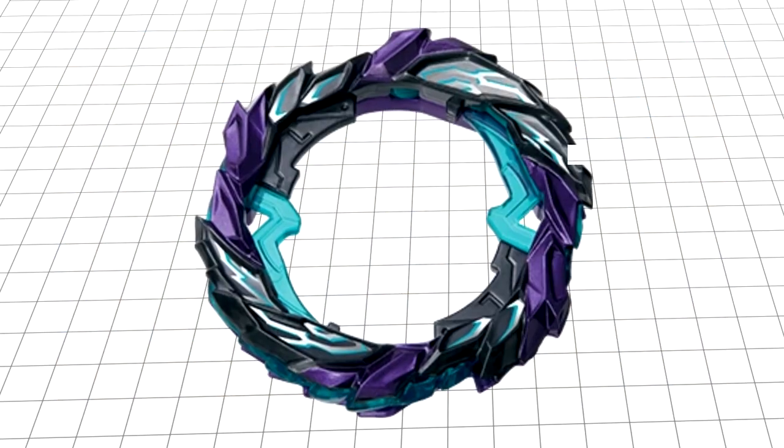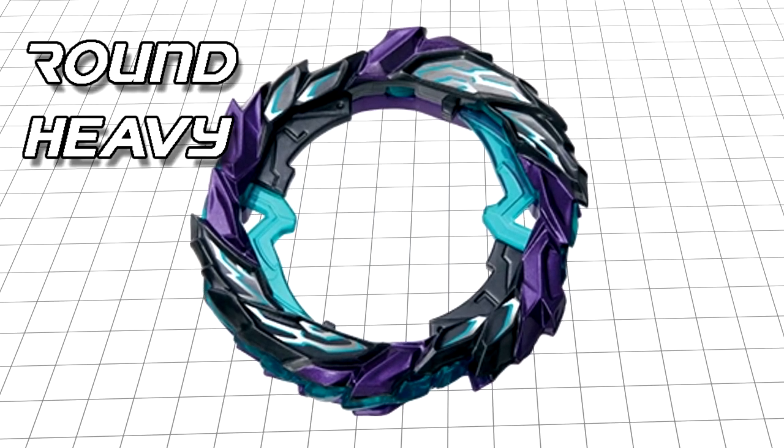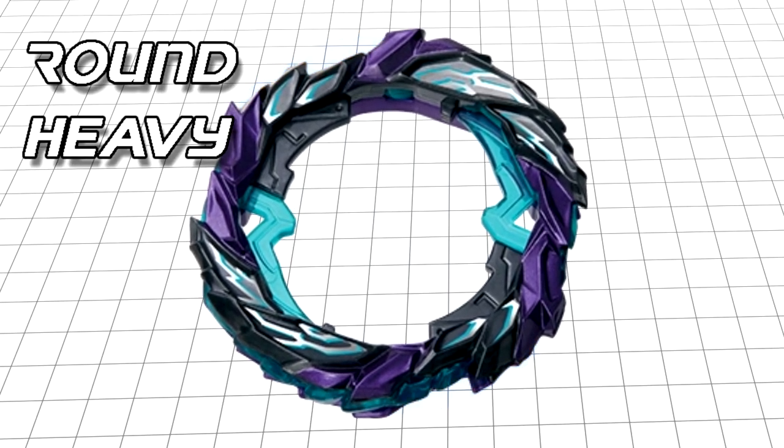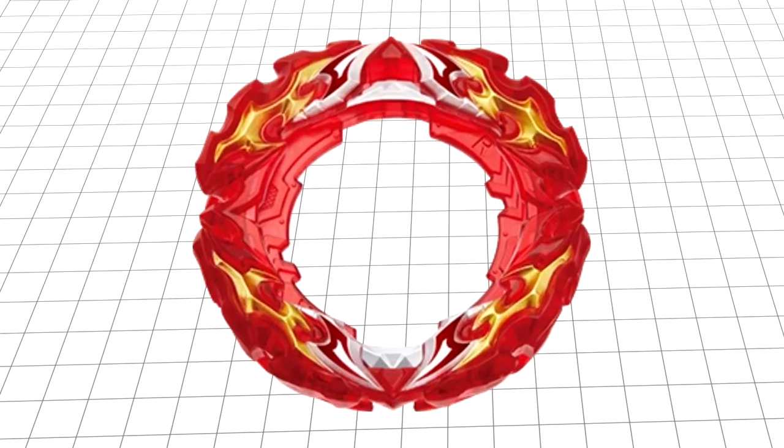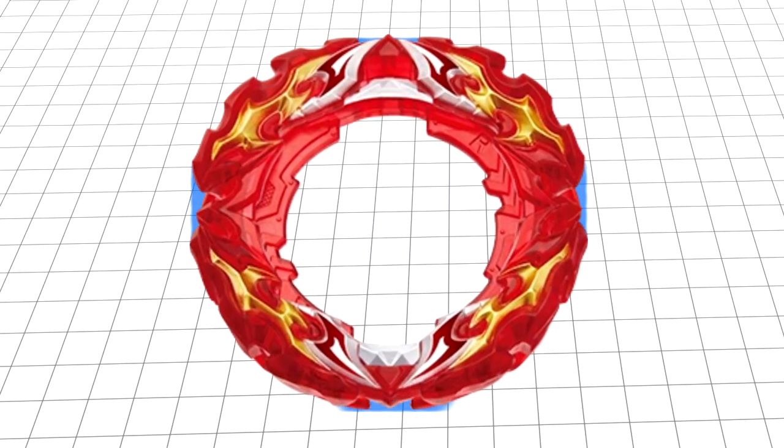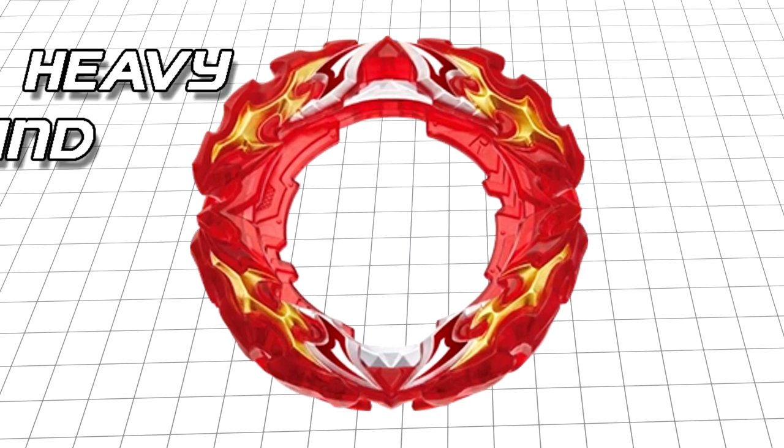A great example of this would be the Roar Blade. It's mostly rounded and fairly heavy, but has two contact points at the sides to be able to counter attack. Another blade that has good defense would be Prominence. Like Roar, it has two contact points at either side. Fairly heavy and decently round.